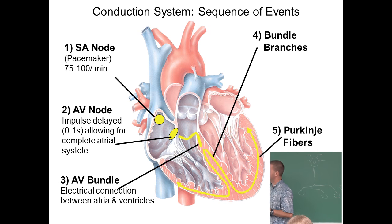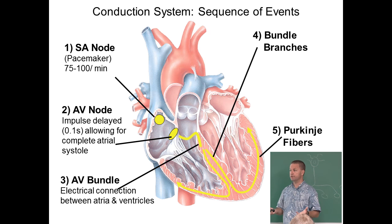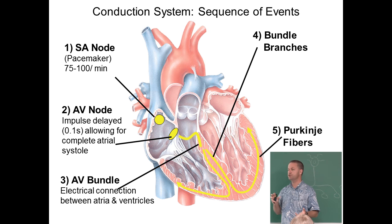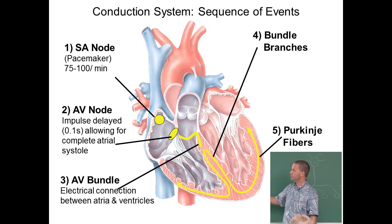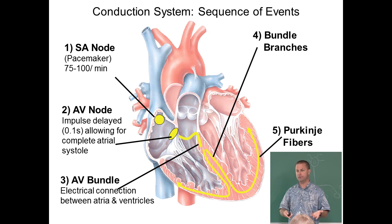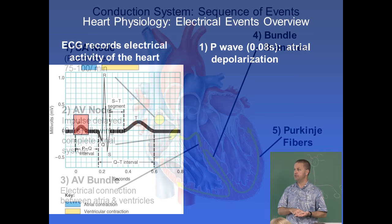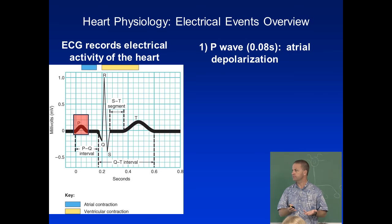The pause between the SA node and AV node is important — it allows the atria to contract before the ventricles do. You don't want them contracting simultaneously; atria contract first, then ventricles. An electrocardiogram (ECG or EKG — 'EKG' from the German word 'Kardio') records these electrical events and is used in veterinary clinics to monitor animals under anesthesia.